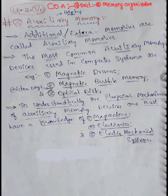The subject is Computer Organization Architecture, 4th Unit, 2nd Chapter: Memory Organization. In there, the topic is Auxiliary Memory. It will come as: explain about auxiliary memory, or define auxiliary memory, or what is auxiliary memory.